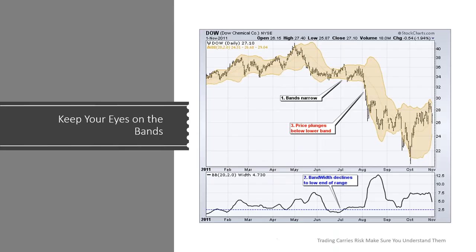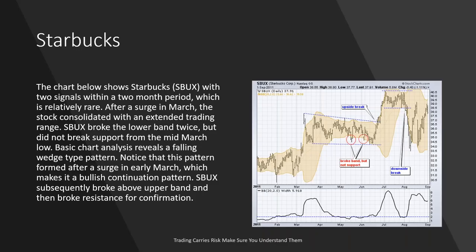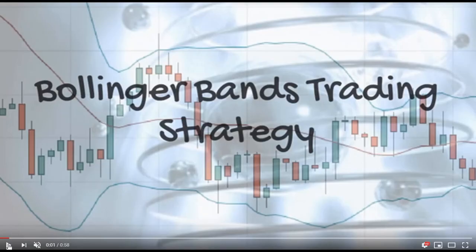It's simply a matter of keeping your eye on the band: the band narrows, and then price plunges out — that's the Bollinger Band Squeeze. Even though the Bollinger Band Squeeze is straightforward, traders should at least combine this strategy with basic chart analysis and confirmed signals. For example, a break above resistance can be used to confirm a break above the upper band; similarly, a break below support could be used to confirm a break below the lower band. Unconfirmed band breaks are subject to failure.